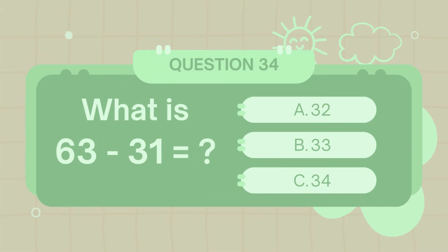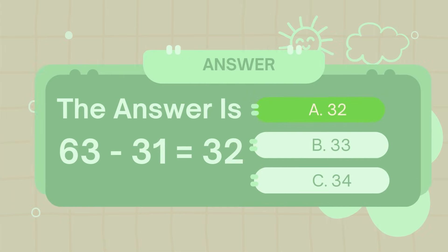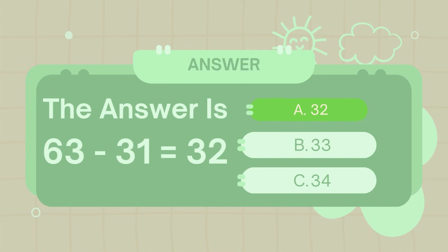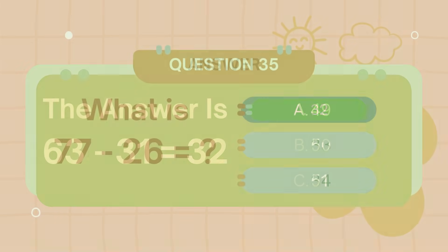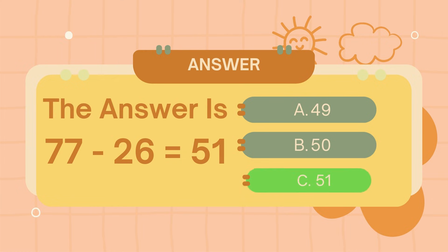What is 63 minus 31? The answer is 32. What is 77 minus 26? The answer is 51.